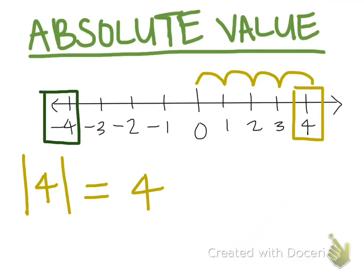To find the absolute value of negative four, we simply look at the number line and see how far away from zero negative four is. From negative four, I have to go one, two, three, four spaces to get to zero. So if I want to know the absolute value of negative four,